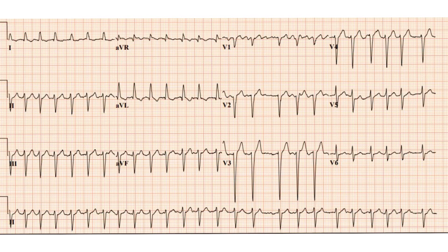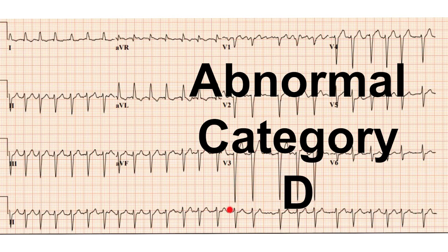The third EKG is also clearly abnormal. The main reason is tachycardia — the rate is very fast. Without going into details about the exact rhythm type — whether sinus tachycardia, sinus arrhythmia with tachycardia, atrial fibrillation, or flutter — this is an abnormal EKG from the first glance.